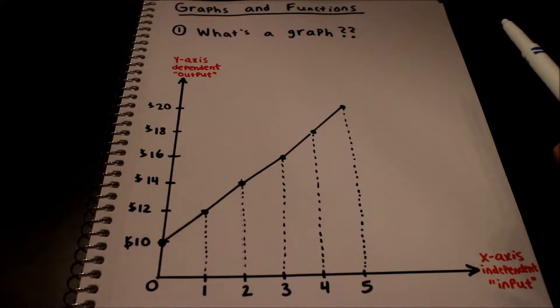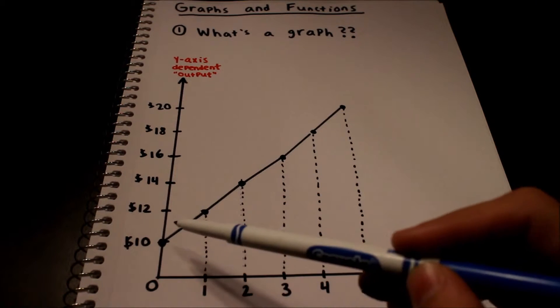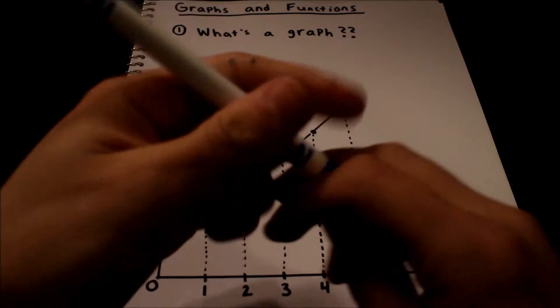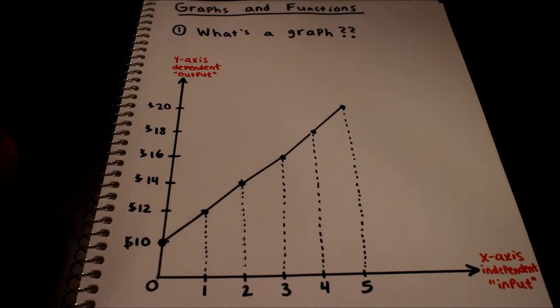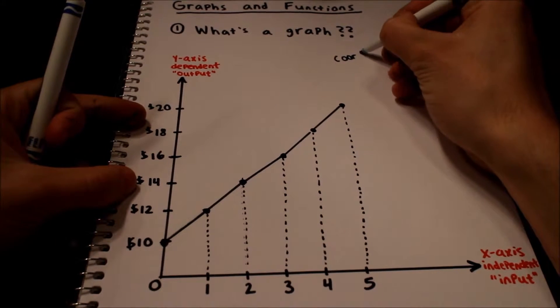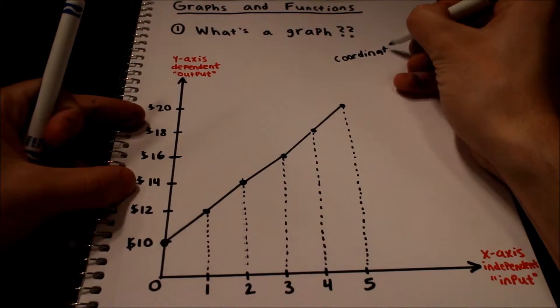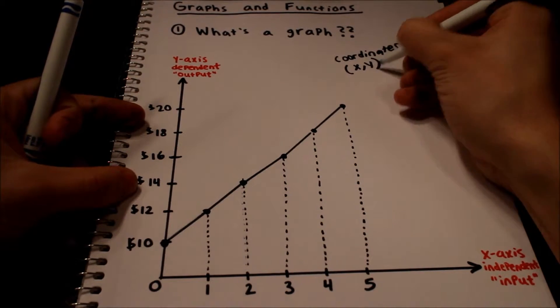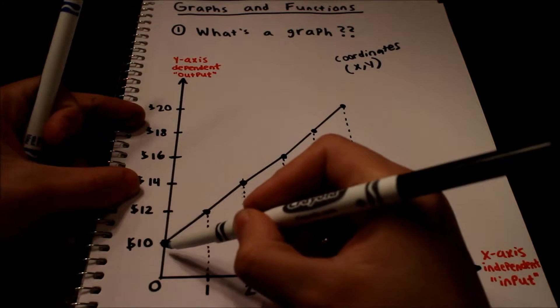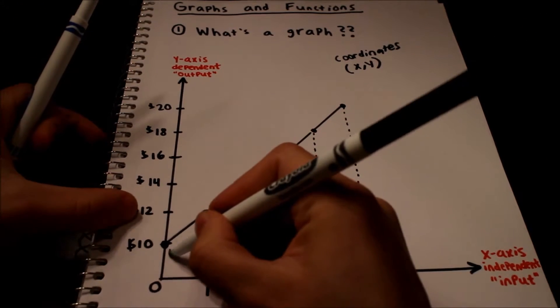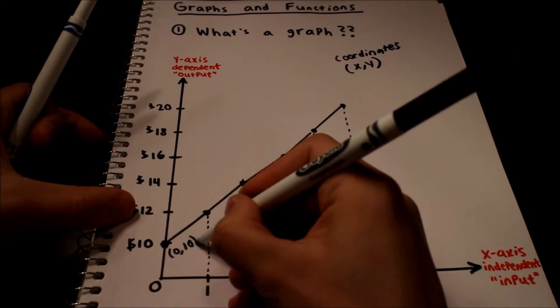This is called the Cartesian coordinate system. That means each one of these points has coordinates, and they're designated like this: X comma Y. So if you look at the first point, that's at X equals 0 and Y equals 10. So that's the point 0 comma 10.